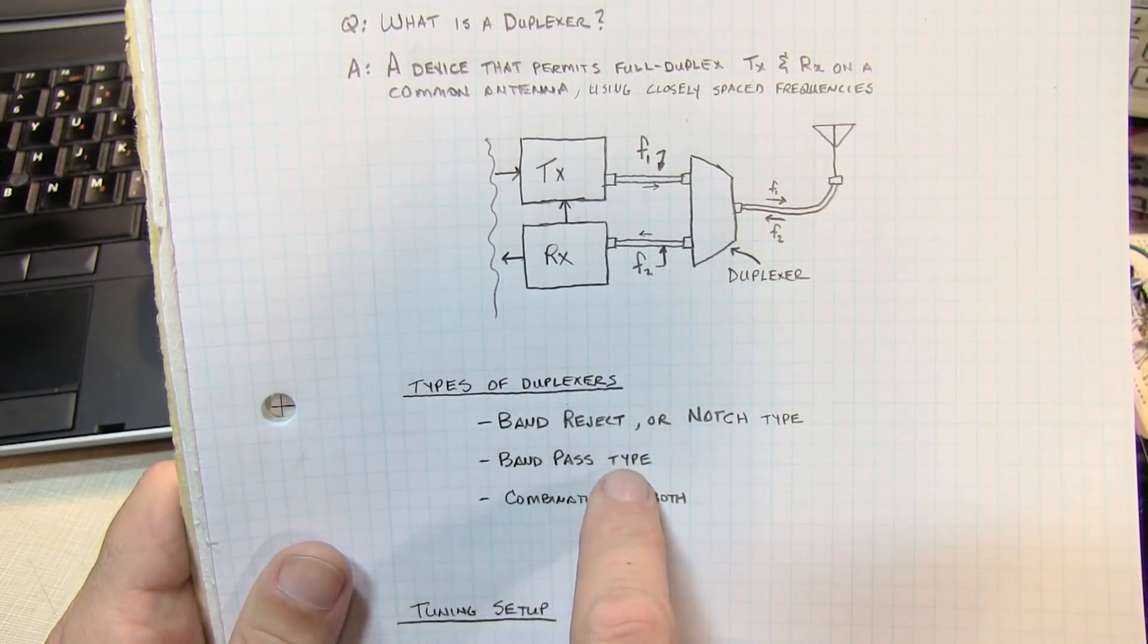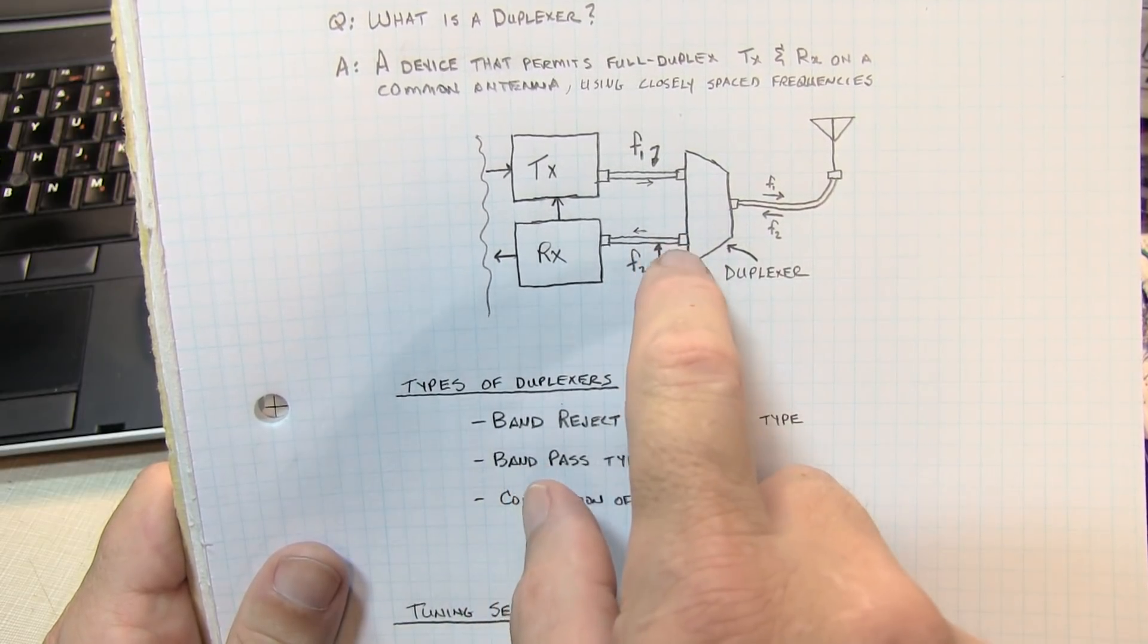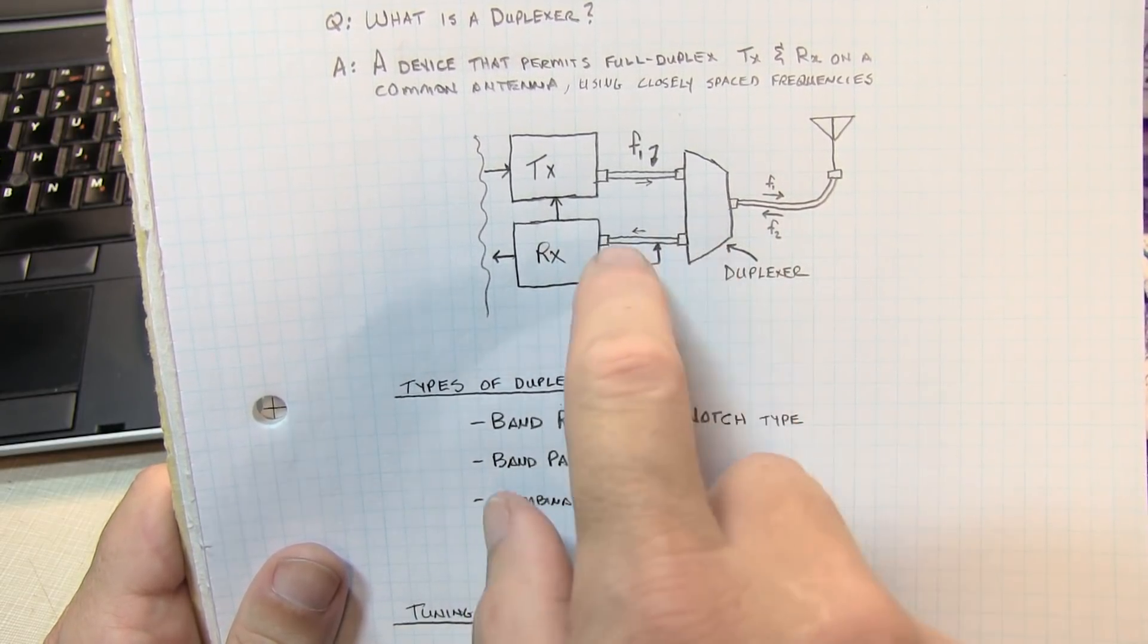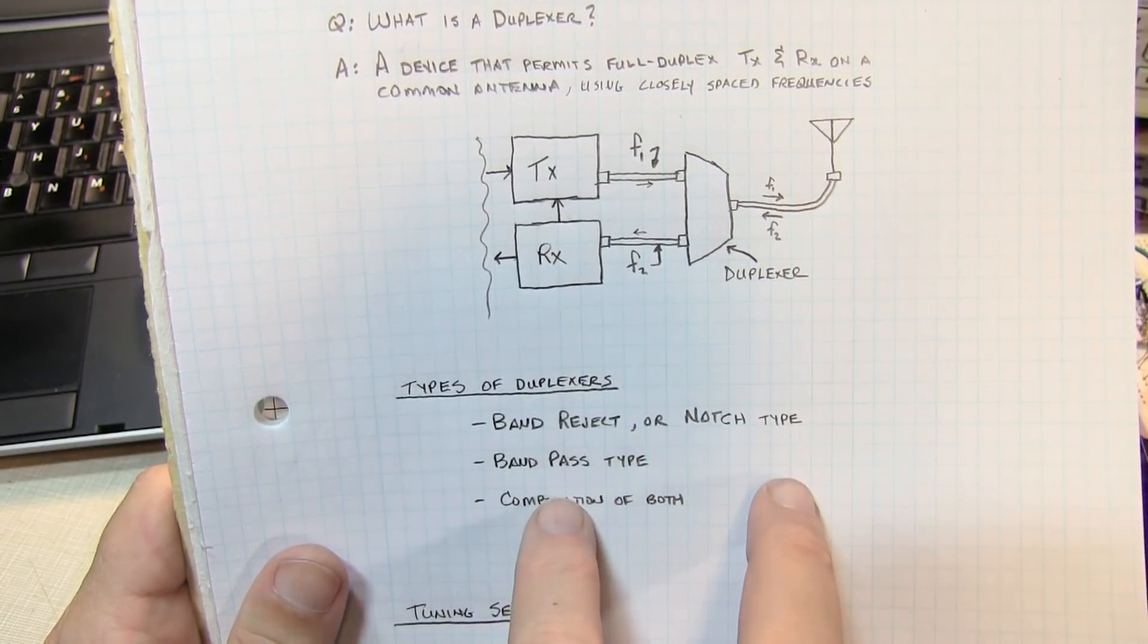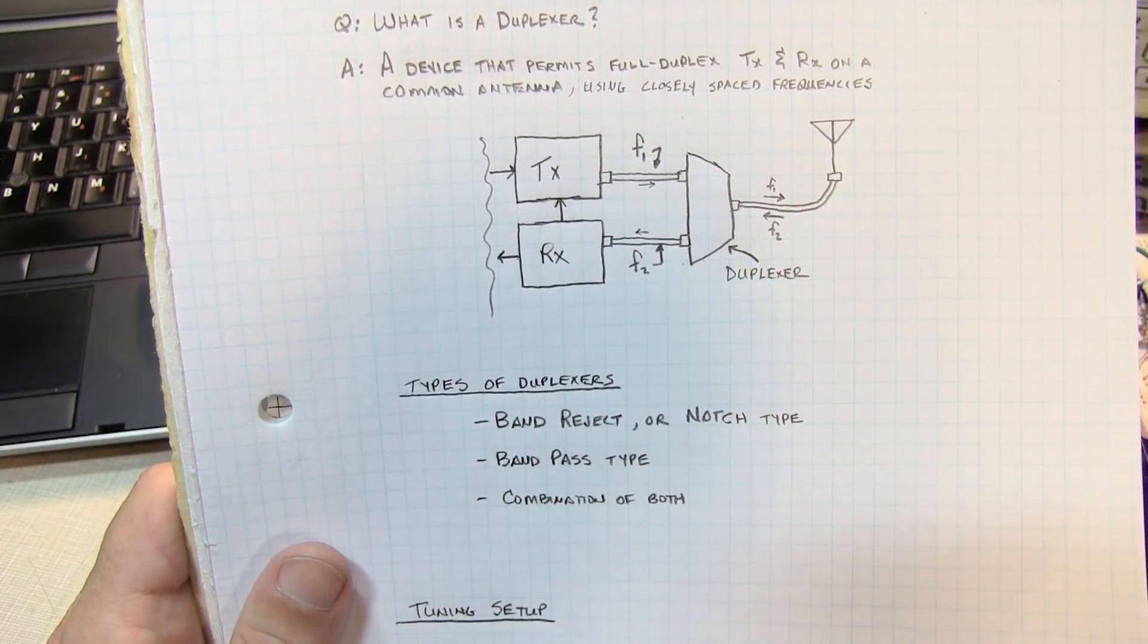There's also band pass type filters. The band pass type actually sets a narrow band pass filter around both the transmit and receive paths with high rejection for out-of-band signals, and that's typically the preferred type.